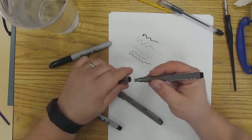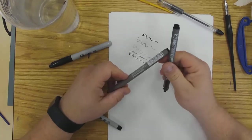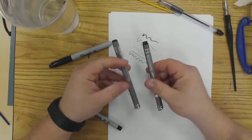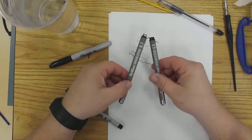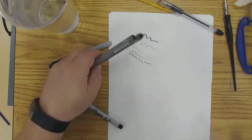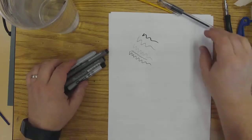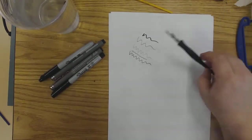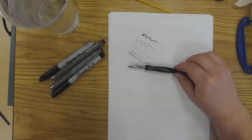You can get different weights to the line. This is a .3. This one is a .7. You can get some variety there, but I also find it's really fun to use these old-fashioned pens. These are called Crow Quill pens.